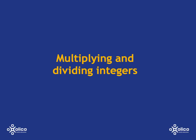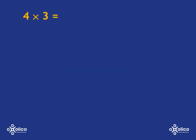Let's look at multiplying and dividing with integers. If we go back to primary school, 4 multiplied by 3 just means 4 lots of 3, and that is going to be 12.